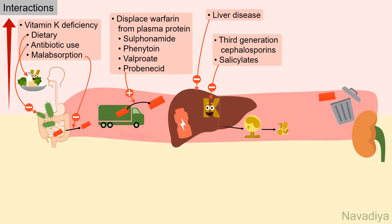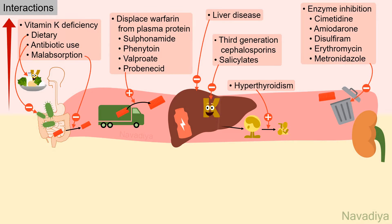Salicylates such as aspirin also have antiplatelet activity, further enhancing bleeding tendency in patients on warfarin. Hyperthyroidism is a hypermetabolic state — clotting factors are degraded much faster, increasing the warfarin effect. Finally, enzyme inhibitors like cimetidine, amiodarone, disulfiram, erythromycin, and metronidazole reduce the elimination of warfarin and thus increase its effect. Similarly, elimination is reduced in patients with a defect in the CYP2C9 enzyme.